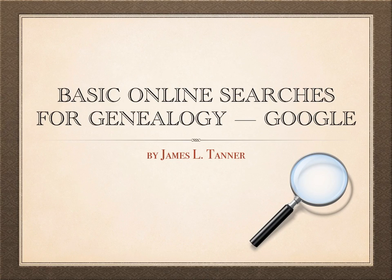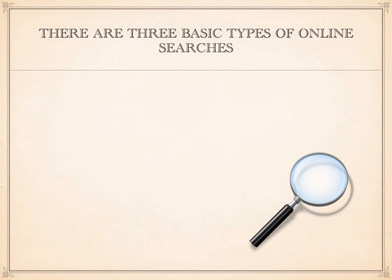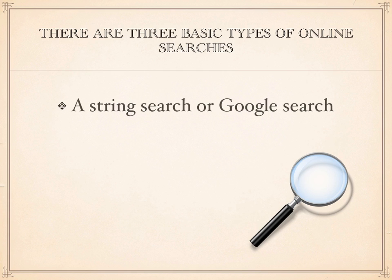Welcome to basic online searches for genealogy. In this segment, I will be talking about searches using the Google search engine, also called string searches. There are three basic types of online searches. The first is a string search or Google search, which is primarily used by Google search engines, and that is what I will be covering in this video.